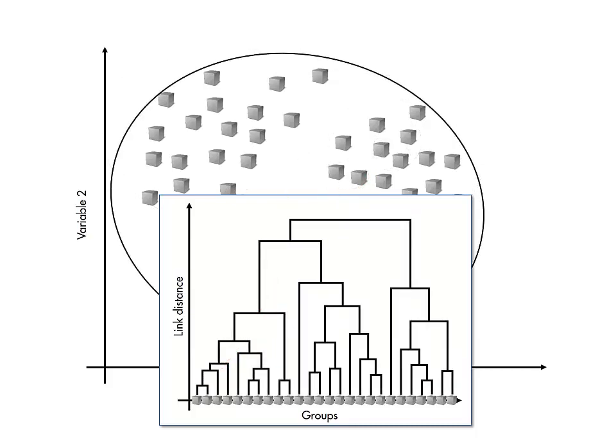However, with many observations, the full dendrogram can be difficult to visualize. Therefore, by default, MATLAB shows only as far as 30 groups at the bottom level.